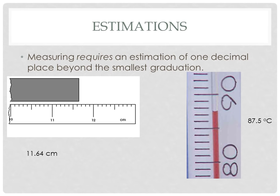If you look at that and say 87.4, that would be appropriate. 87.6, perhaps. Anything outside of that, though, would not be a very good estimation. If you say something like 87.2, this liquid level is obviously more than two tenths of the way between the 87 and 88 mark. So it's not just a guess — you have to physically try to subdivide this space into ten equal parts and make the best estimation possible. There are good and bad estimations, but there's not one single correct estimation.